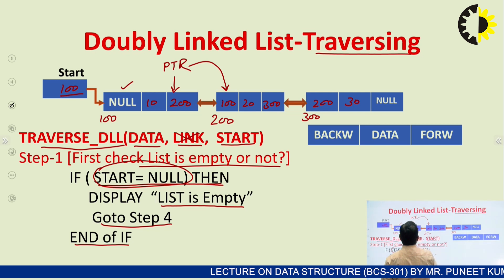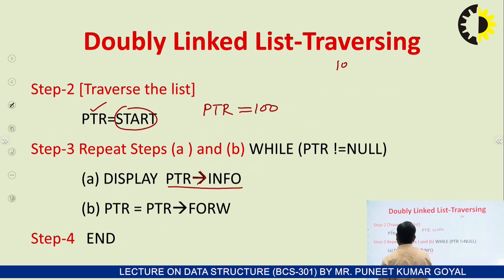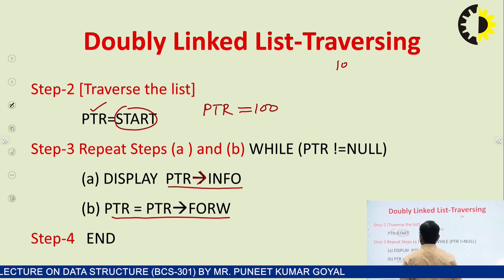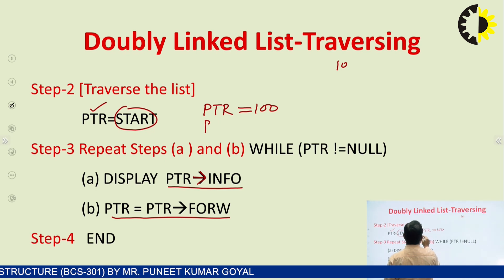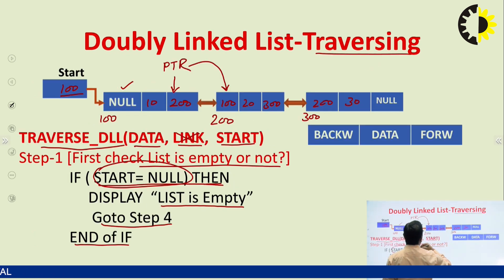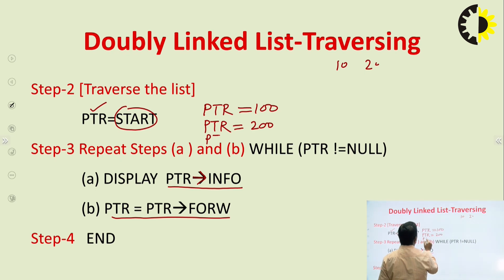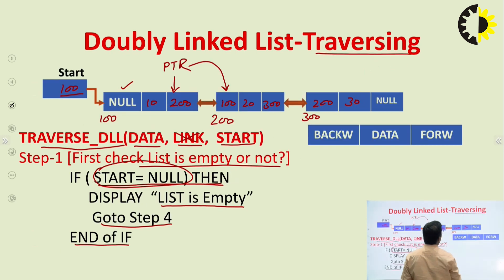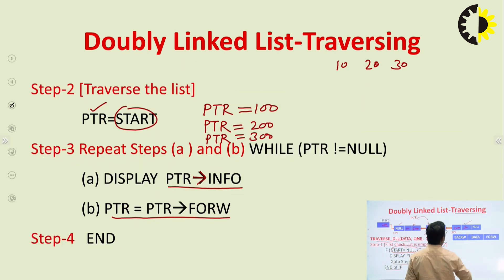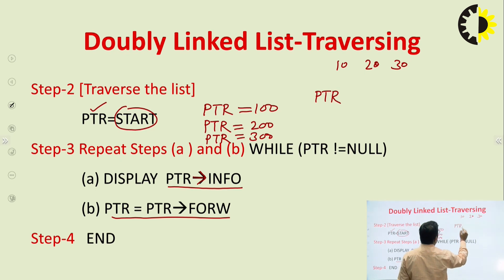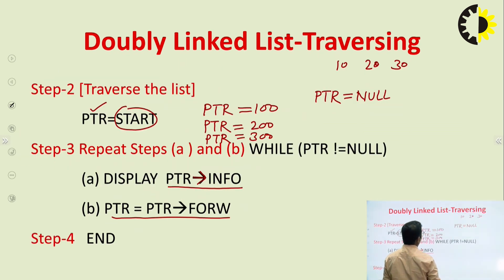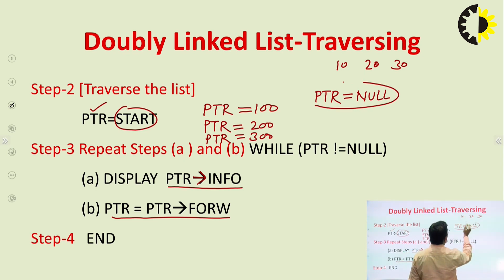ptr will point to the second node and the address of the second node is stored in the forward address field of the first node. So we simply write ptr equals to ptr arrow forward. In the next step ptr will contain 200 and we will display 20. You can see in the diagram. Again we traverse — ptr will contain 300 and value 30 will be printed. After printing the value of the last node, ptr will contain null.